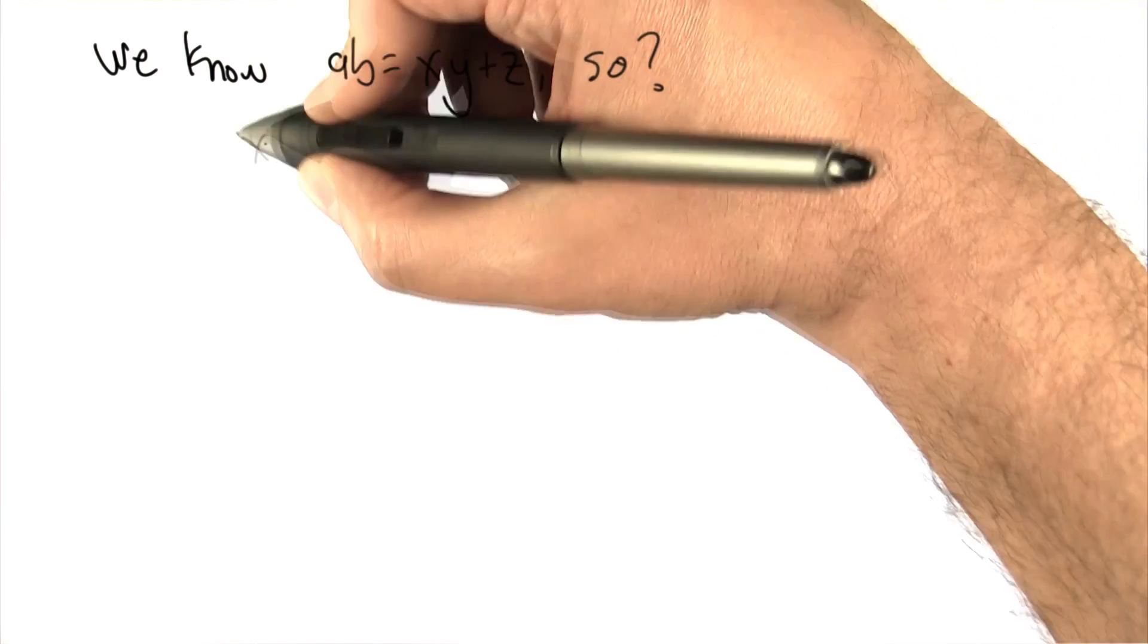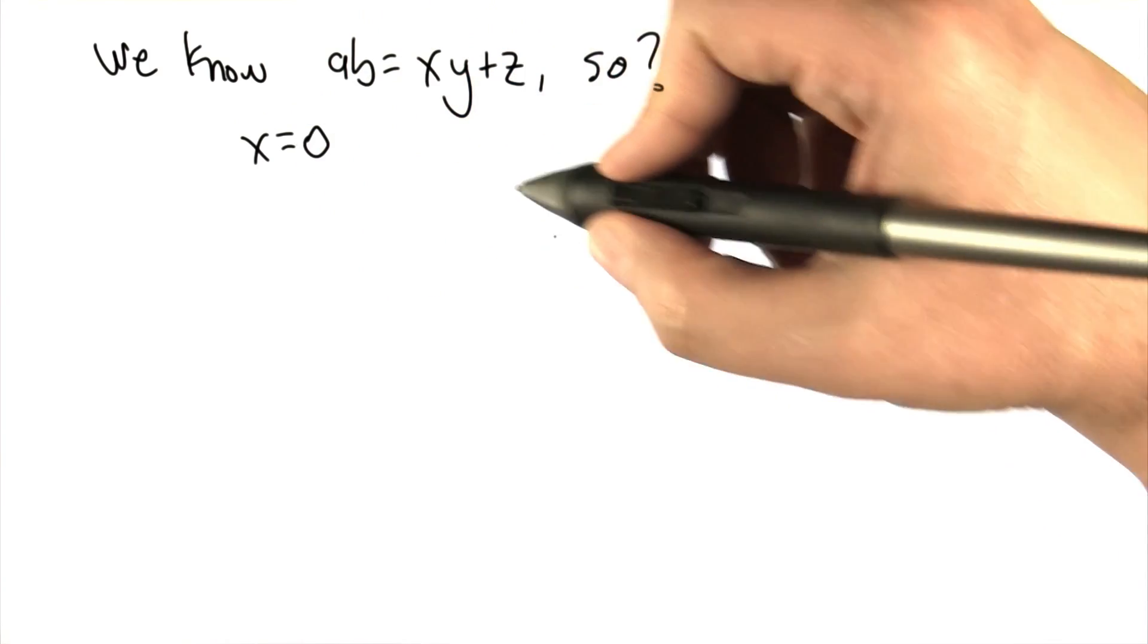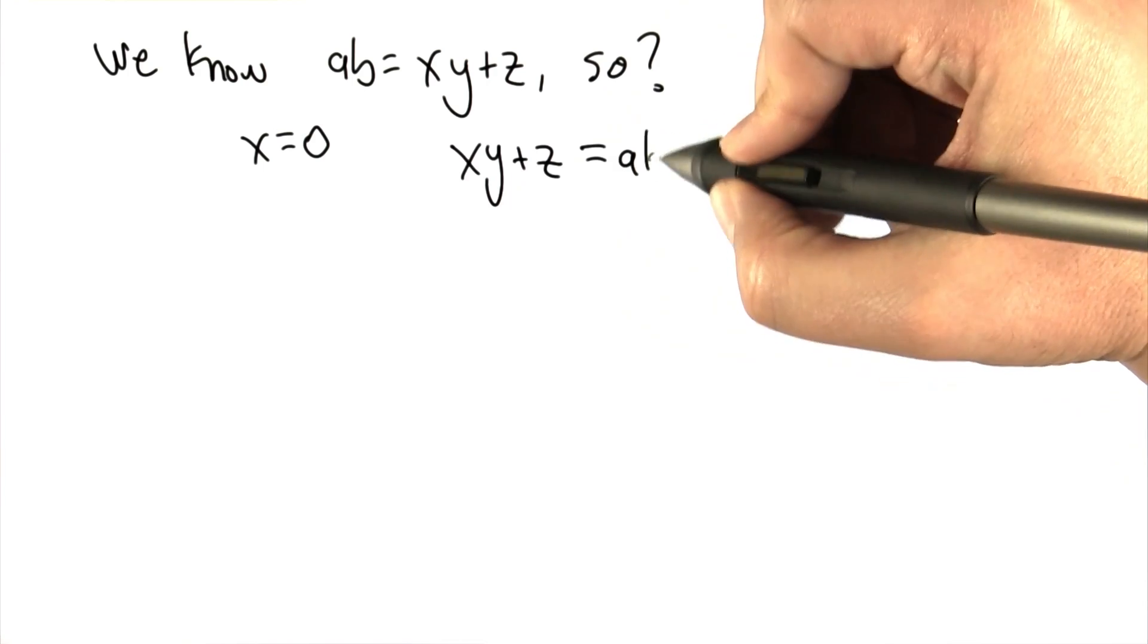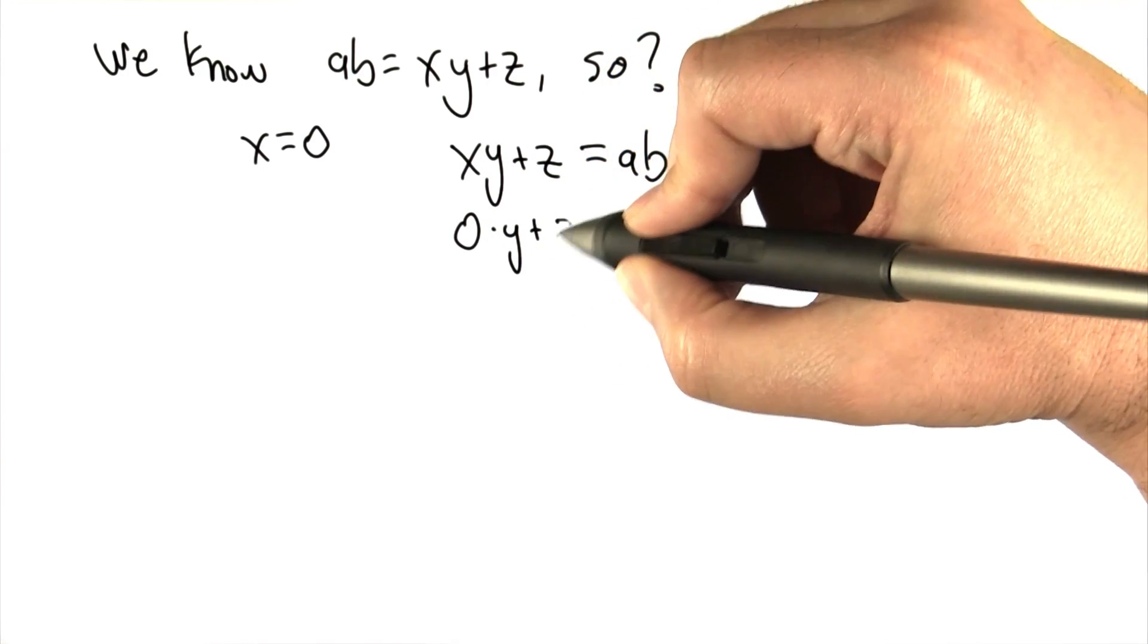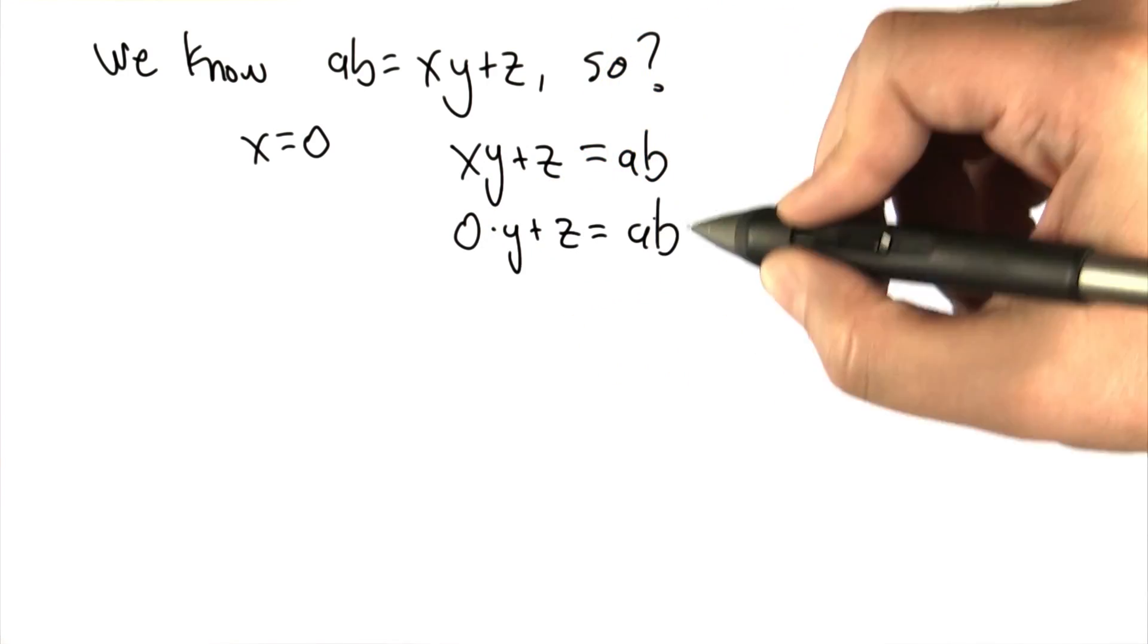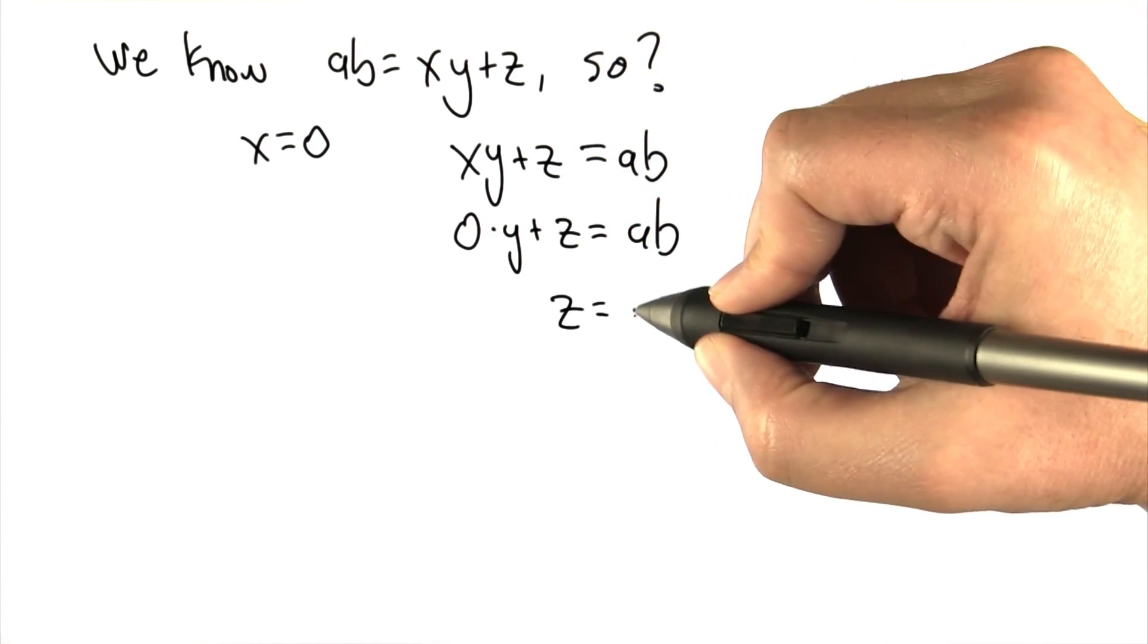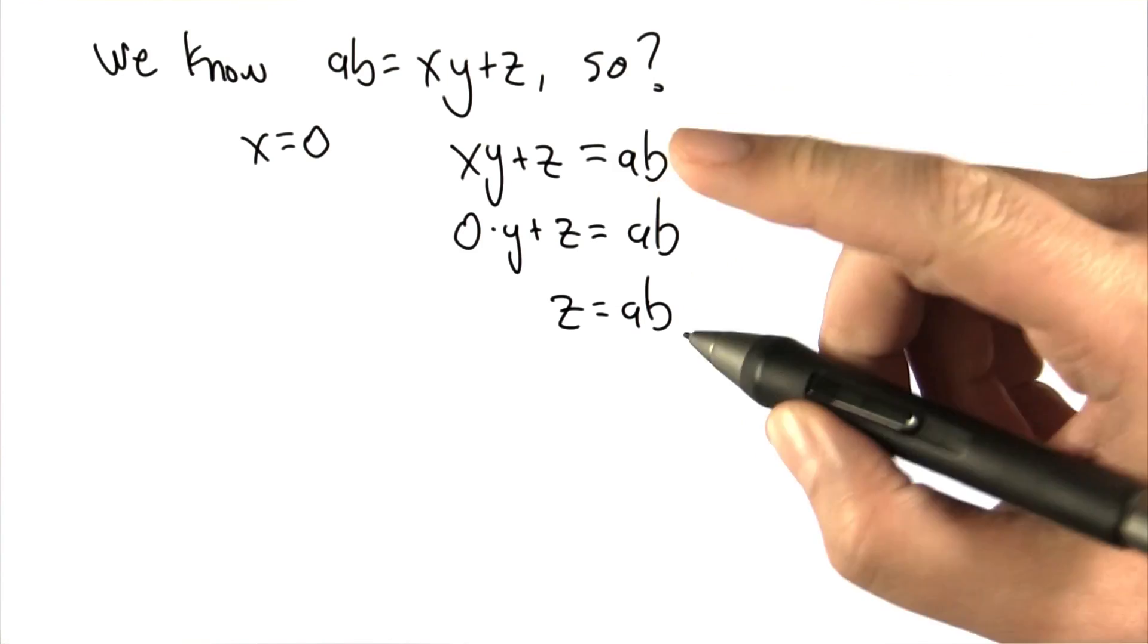The while loop terminates when X equals 0. So what does that mean? XY plus Z has to equal AB, but X is 0, so 0 times Y plus Z equals AB. This has to be true. Well, 0 times Y is 0,